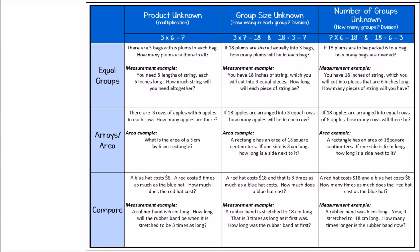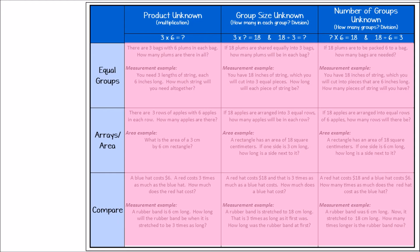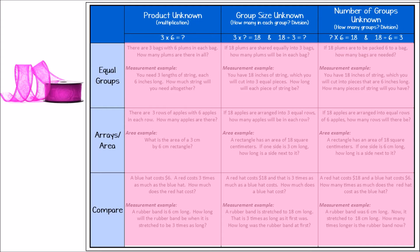We can further categorize word problems by deciding if the problem involves equal groups, arrays or an area, or a comparison. For example, we might be looking at equal groups of wheels on bikes, as in four bikes with two wheels each, or equal lengths of ribbons, as in: I have 12 inches of ribbon — if I cut three-inch lengths, how many lengths will I cut?